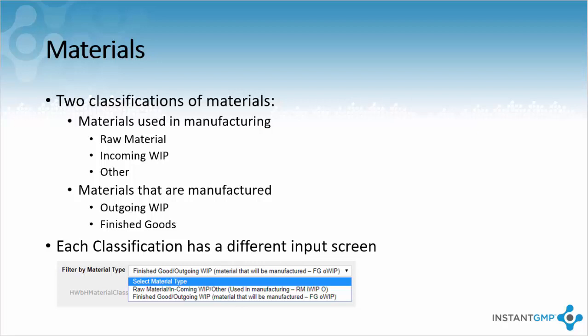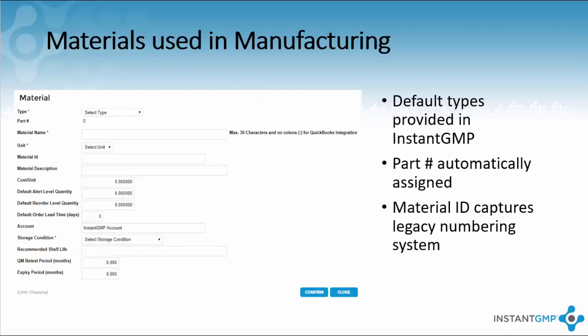Each of these classifications have different entry screens. When entering a material used in manufacturing, you will be presented with the current screen. The material type drop-down comes with default types provided by Instant GMP, but can be edited to match your company's terminology. The part number is automatically generated by the software and is used as a unique identifier of the material. If you have a legacy numbering system you would like to maintain, you can use the material ID section for this purpose.